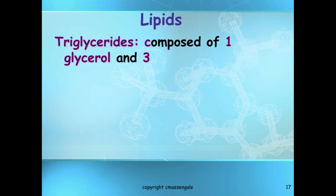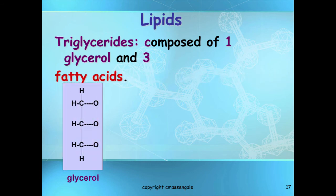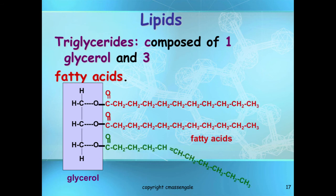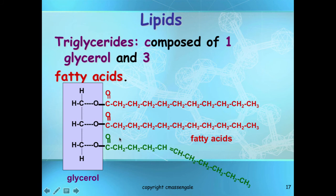What is a triglyceride? A triglyceride is composed of two parts — technically four, but two different types: one glycerol and three fatty acids. The glycerol is like the head — notice it is just a carbon skeleton with hydrogen and oxygen on the end. The fatty acids are the tails. Tri means three, because it has one, two, three fatty acid chains. They can all be saturated, all unsaturated, or a combination. So one glycerol unit and three fatty acid chains.